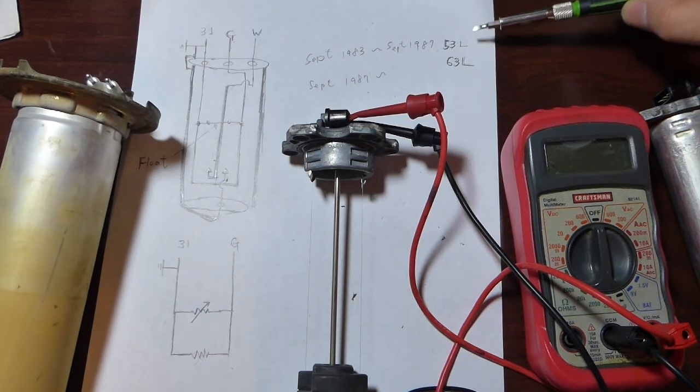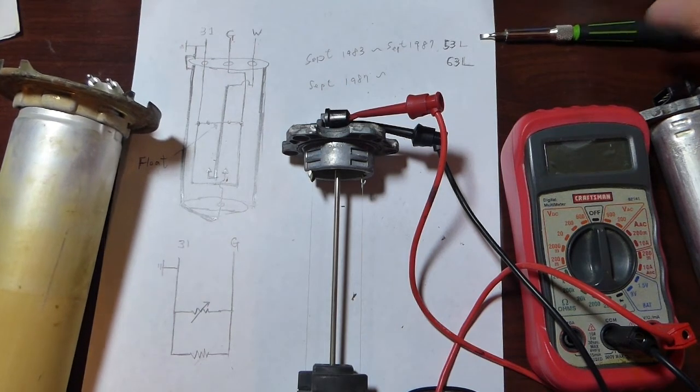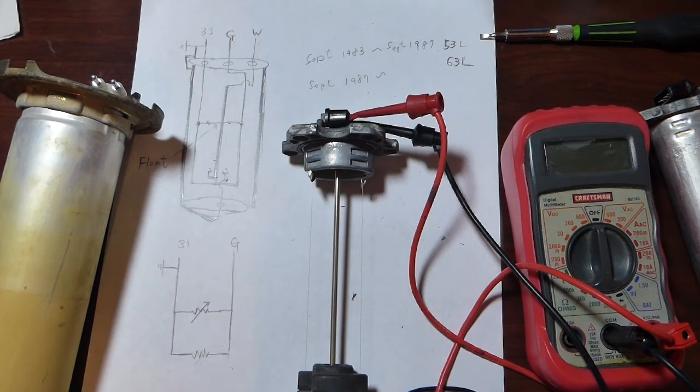If you can only remove one cover and the other one is kind of riveted on there, you cannot remove it, you probably have a 53 liter tank.